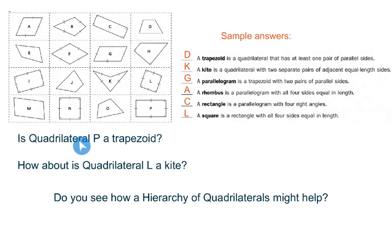Is quadrilateral P a trapezoid? A trapezoid is a quadrilateral that has at least one pair of parallel sides. I hope you would say yes, it is. Even though it's not that traditional looking trapezoid that we think of, this actually meets the qualifications of a trapezoid. It has at least one pair of parallel sides.